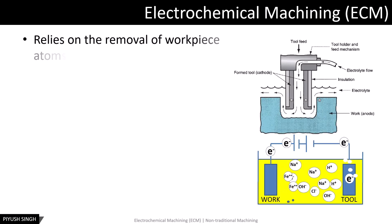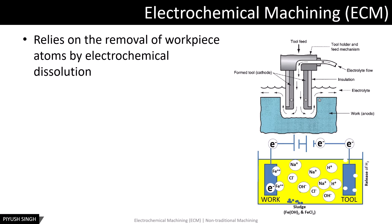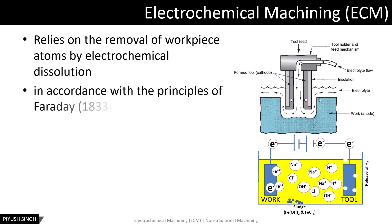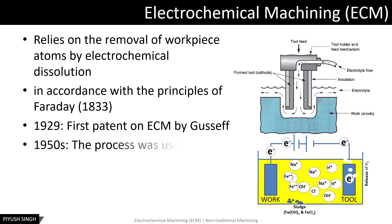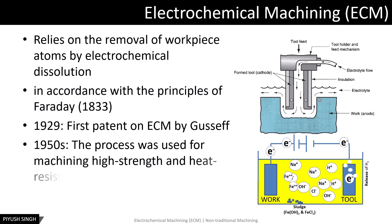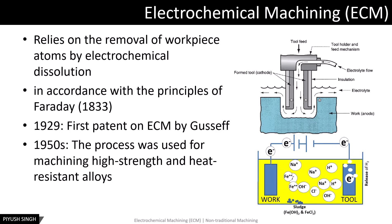Electrochemical machining processes are a group of non-traditional or non-conventional machining processes which rely on the removal of workpiece atoms by the use of electrical energy in combination with chemical reactions. These processes are the reverse of electroplating, also called galvanic coating or deposition process. The work material must be a conductor in the electrochemical machining process. ECM removes metal from an electrically conductive workpiece by anodic dissolution, in which the shape of the workpiece is obtained by a formed electrode in close proximity to, but separated from, the work by a rapidly flowing electrolyte, as shown in the figure.